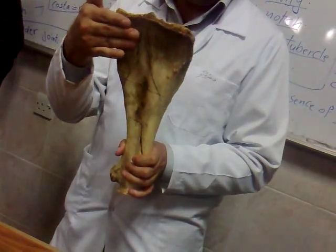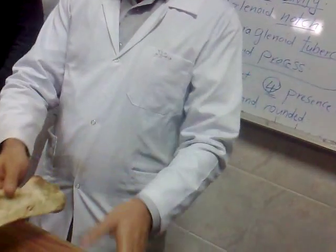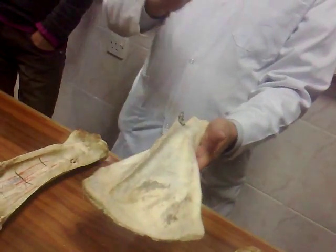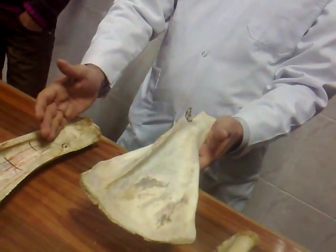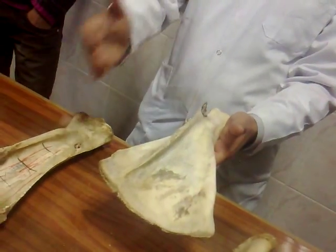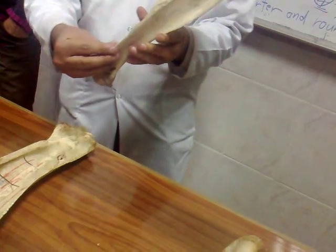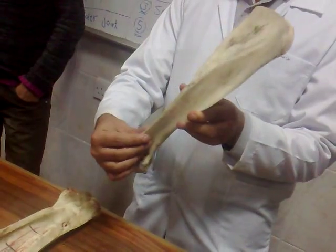Fascia serrata. Differentiation between the ox scapula and the horse: cow scapula or ruminant scapula from the horse — presence of acromion in the cow.